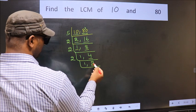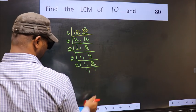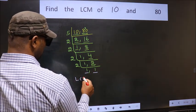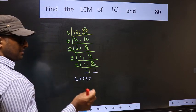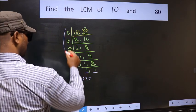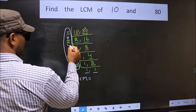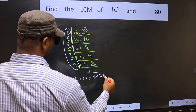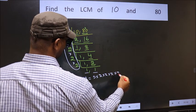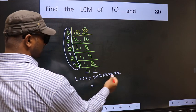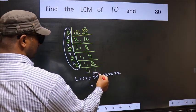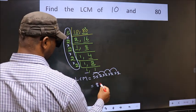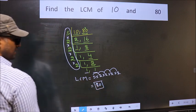Now we have 2. 2 is a prime number, so 2 once 2. We got 1 in both places, so our LCM is the product of these numbers. That is 5 × 2 × 2 × 2 × 2 × 2. Let us multiply: 5 × 2 = 10, × 2 = 20, × 2 = 40, × 2 = 80. So 80 is our LCM.